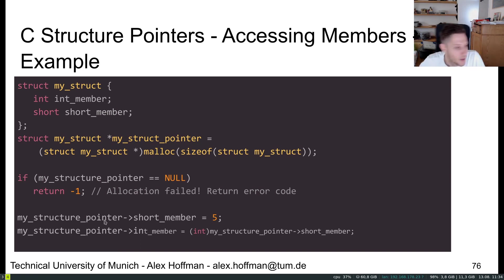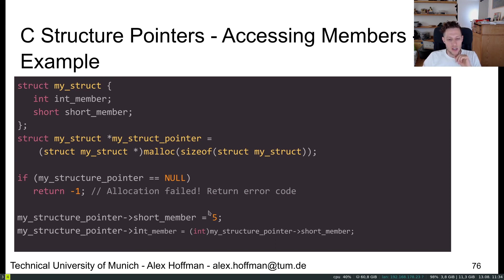Here's a quick code example using the same my_struct. We see the same allocation lines as before, and there's also some error checking. To set the short member, we use my_struct_pointer->short_member, and for the int member, my_struct_pointer->int_member. Here we're also setting the int by typecasting the short. I'll do a quick live example of this now.